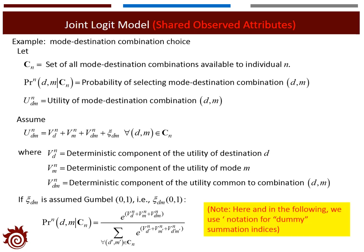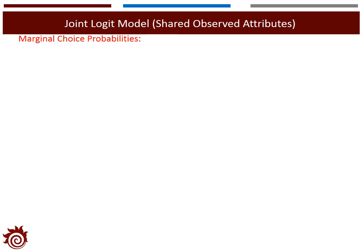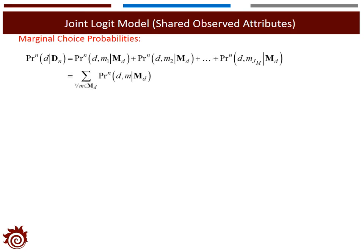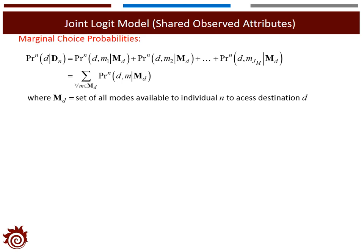Note that here and in the following, we will use notation for dummy summation indexes. Now let's see how we can get the marginal choice probability. First, we want to get the marginal probability for the destination — that is, the probability of taking destination D. From the definition of the joint probability, the marginal probability is the summation of the probability of Dm over all modes available for destination D. Here, MD is defined as the set of all modes available for the individual to access destination D.